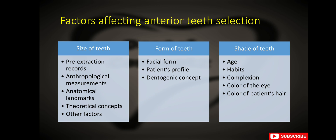What are the different criteria for selection of anterior teeth? Anterior teeth selection is divided into three categories: size of teeth, form of teeth, and shade of teeth. Size can be selected on the basis of pre-extraction records like photographs, extracted teeth, dentition of close relatives, anthropological measurements, anatomical landmarks, and theoretical concepts. Form can be selected on the basis of facial form, patient's profile, and dentogenic concept. Shade can be selected based on age, habits, complexion, color of the eye, and color of the patient's hair.